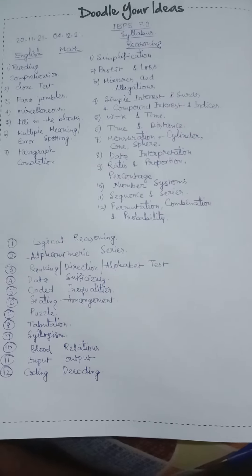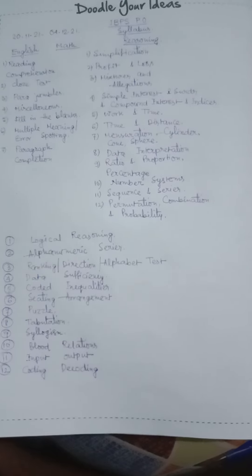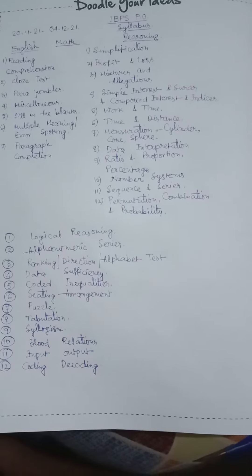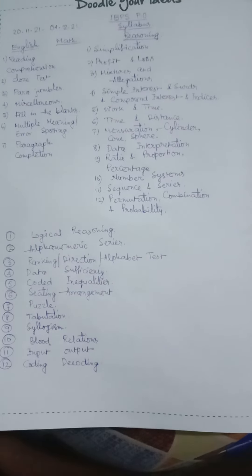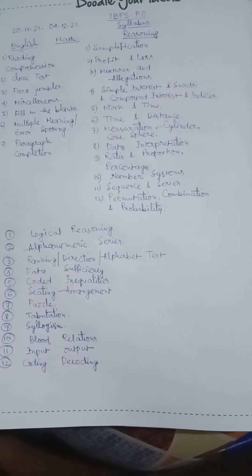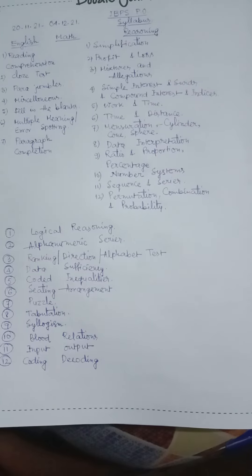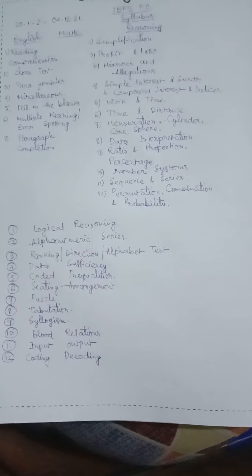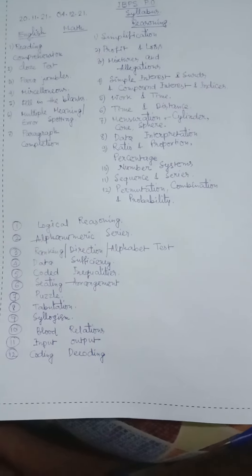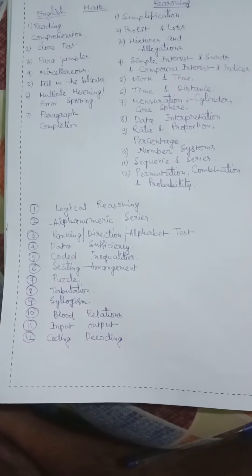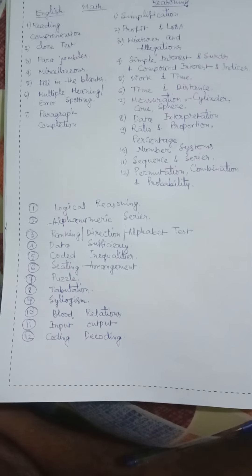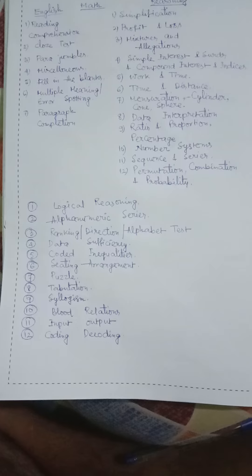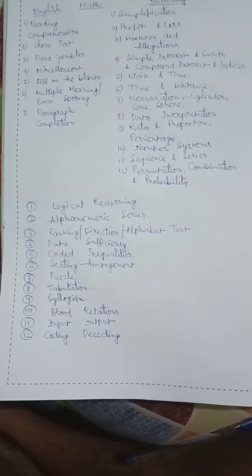Further topics include work and time, time and distance, mensuration — cylinder, cone, sphere — data interpretation, ratio and proportion, percentage, number systems, sequence and series, permutation, combination and probability. Logical reasoning topics include alpha-numeric series, ranking, direction, alphabet test, data sufficiency, and coded inequalities.